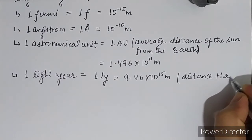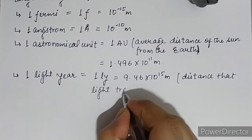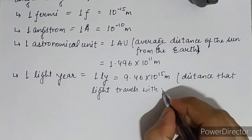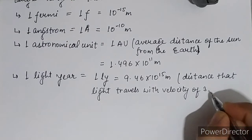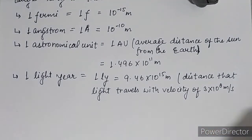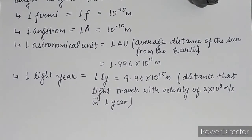What is a light year? It is the distance that light travels — with the velocity of light, 3 × 10 to the power 8 meters per second — in one year. That distance is your light year.